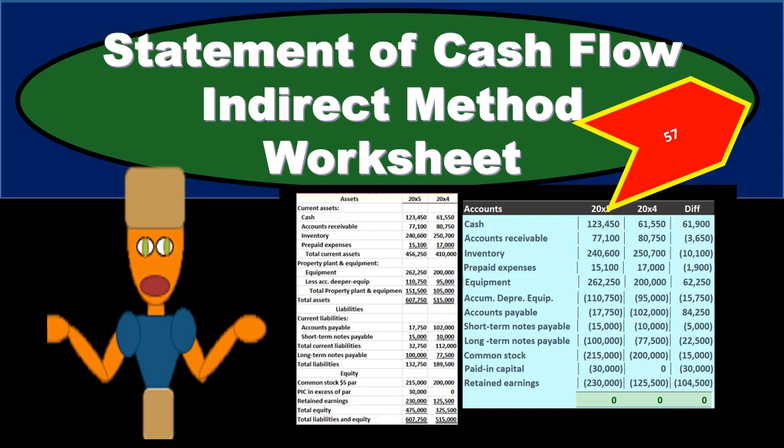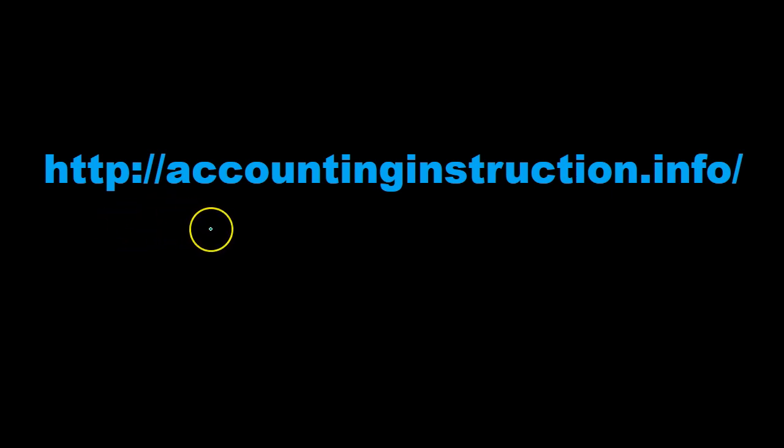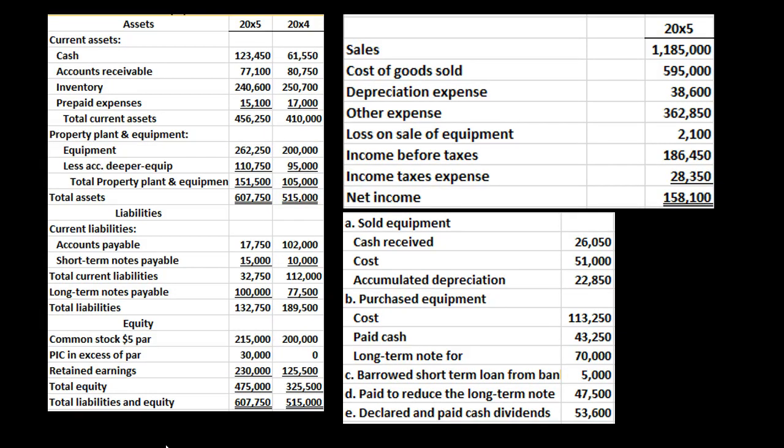In this presentation we will put together a worksheet that will then be used to create the statement of cash flows using the indirect method. To do this we're going to use our resources which will include a comparative balance sheet, an income statement, and added information.